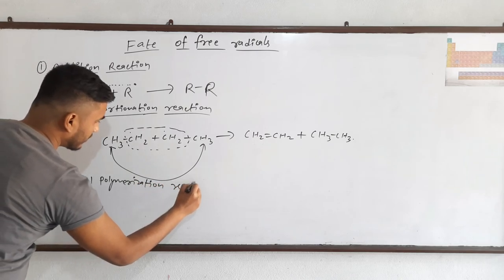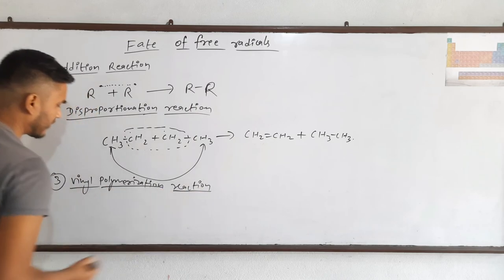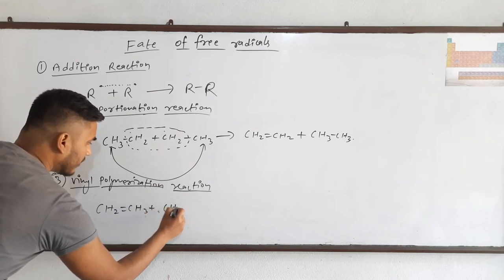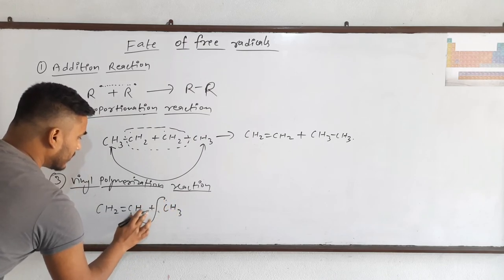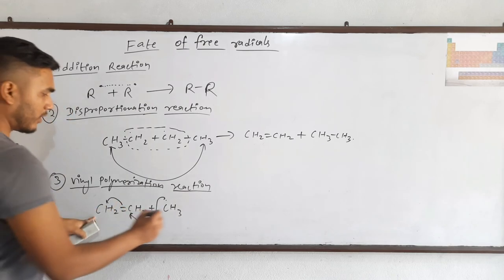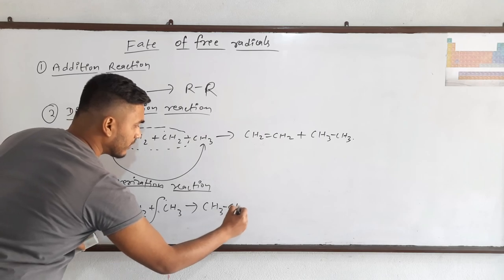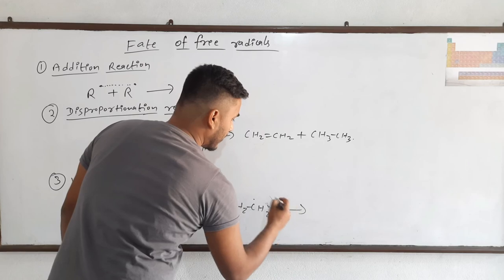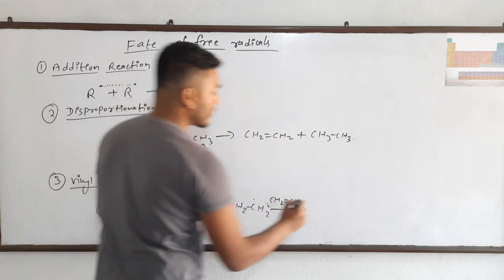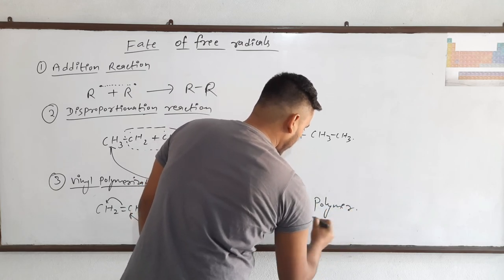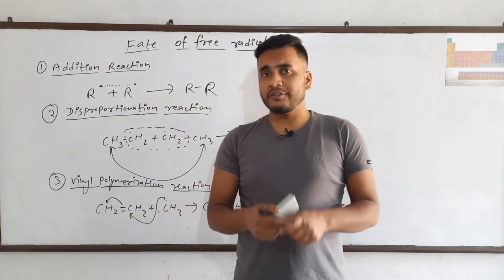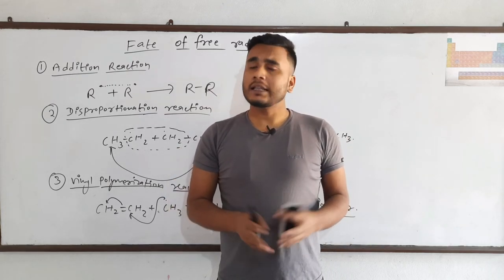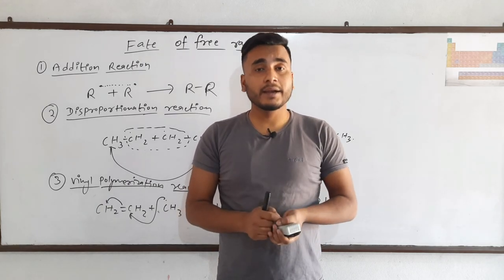The last fate reaction is vinyl polymerization. In this, ethene reacts with a methyl free radical: the radical comes here, this bond breaks and an electron comes on the carbon, forming a new free radical. When more ethene is supplied, it forms a polymer — this is called vinyl polymerization. These are some of the reactions that free radicals undergo. I hope you understood everything about free radicals. If you like the video, please share it. Thank you for watching.